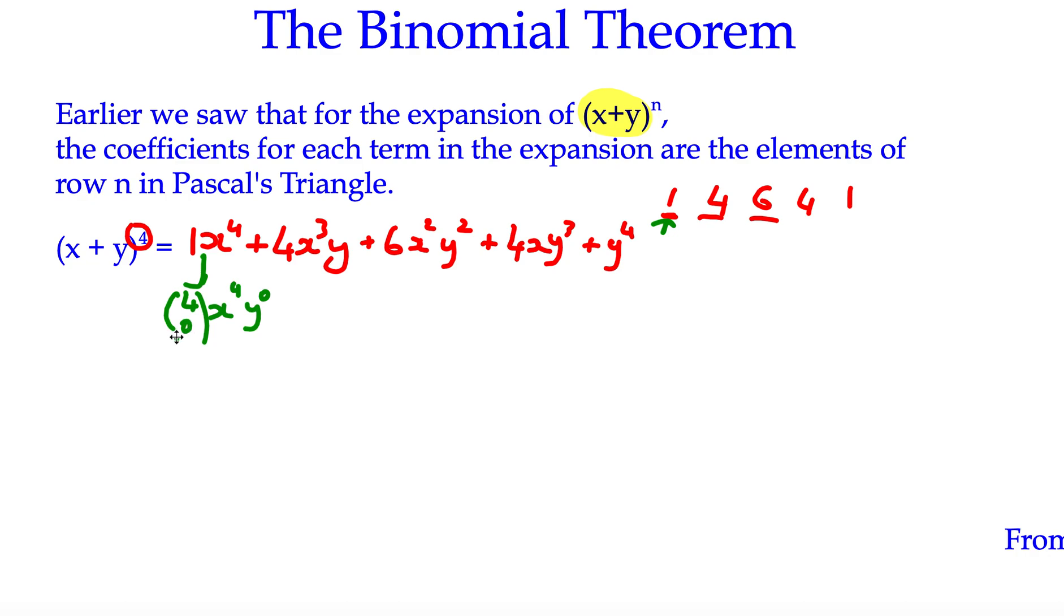Now notice that the 0 here matches with the power of y. Let's look at the second one. The 4 is actually the position 1 in row 4, so we call that 4 choose 1, and we get x to the power of 3 and we've got y to the power of 1.